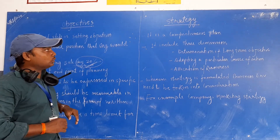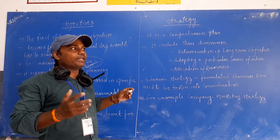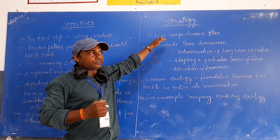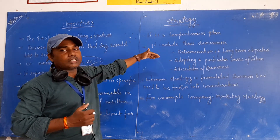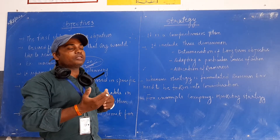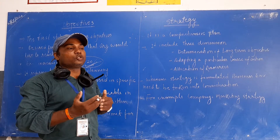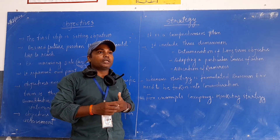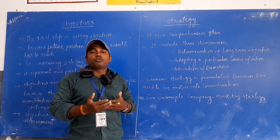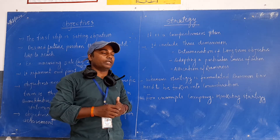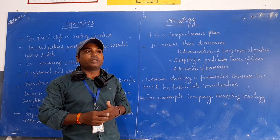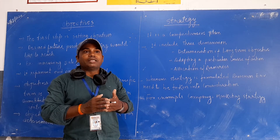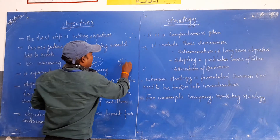The next step is the strategy. The strategy is a very comprehensive plan. It is a comprehensive plan because whenever a strategy is formulated, it needs to take into consideration the business environment. When we do this strategy, we consider business involvement and scale the opportunity. Those responsible persons — who are the CEO and top management — whenever they are formulating the strategy, before they do so, they conduct a SWOT analysis: Strengths, Weaknesses, Opportunities, and Threats.